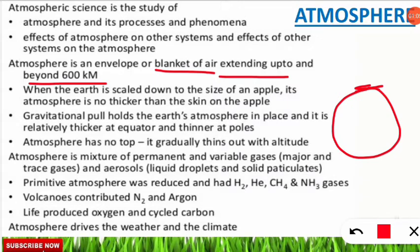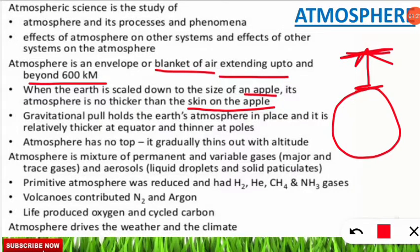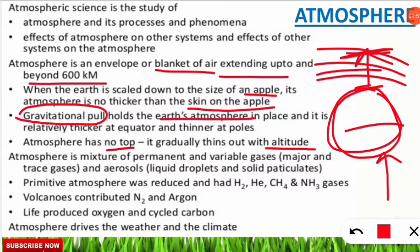When the Earth is scaled down to the size of an apple, its atmosphere is no thicker than the skin on the apple — that is the representation given by this example. Next, gravitational pull holds the Earth's atmosphere together. All the spheres — stratosphere, mesosphere, thermosphere — are held together with the help of gravitational pull. The atmosphere has no top; it gradually thins out with altitude, and when we move up we see the thinning of the layer.